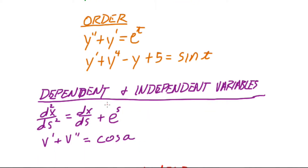Dependent and independent variables are similar to a normal function where you'd have y equals x squared — x is the independent variable and y is the dependent variable because its value depends on what x is. In a differential equation it is very similar: the dependent variable is the one that has been differentiated. In this example the dependent variable is x and the independent variable is s; in the other, the independent variable is a and the dependent variable is v.